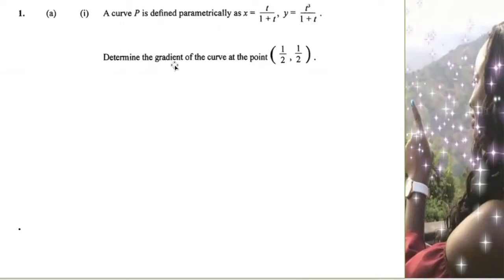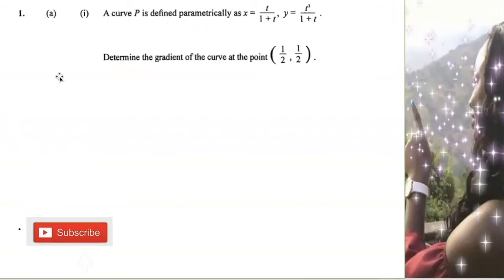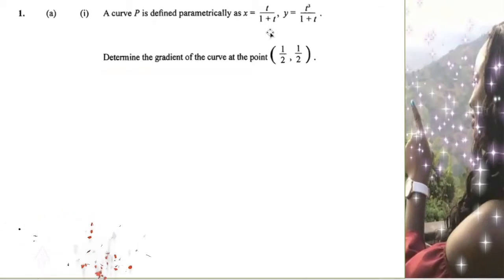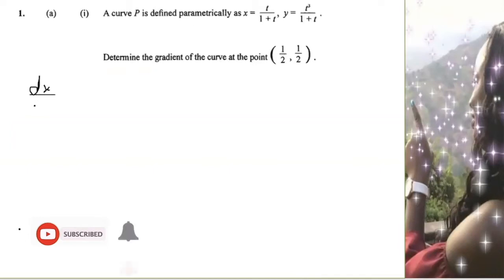When we say determine the gradient, the gradient is found by differentiating. I need to differentiate y with respect to x, but we have a third variable — that's why it's parametric. Parametric is when we have three variables. First, we have to find dx over dt, differentiating x with respect to t. I also need to find dy over dt, differentiating y with respect to t.